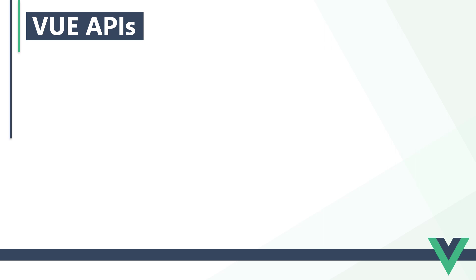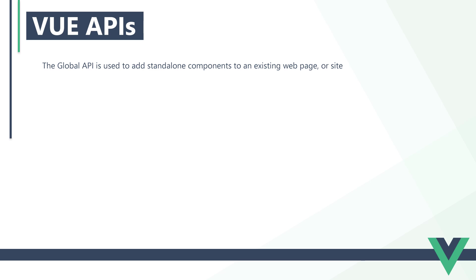Vue is one of the few modern JavaScript frameworks that can be used to create full single-page applications, or standalone components that can be dropped into an existing web page. What we want to do determines which one we pick. The global API is used to add standalone components to an existing web page or site. It's just a file with the core Vue library, bundled and minified. We can download and host it ourselves, or grab the hosted link from a CDN like JSDelivr.